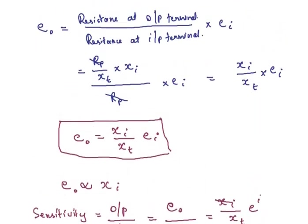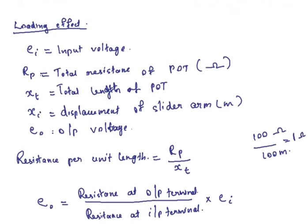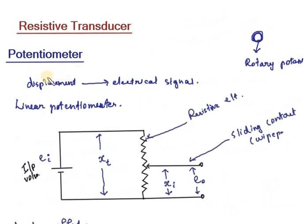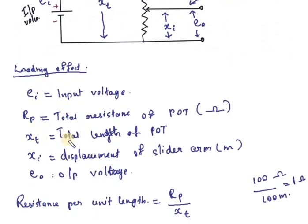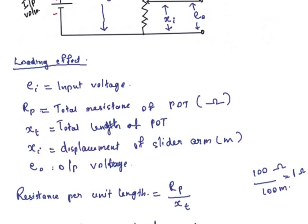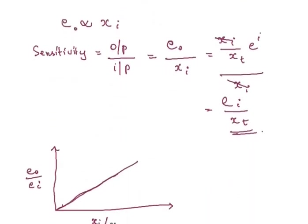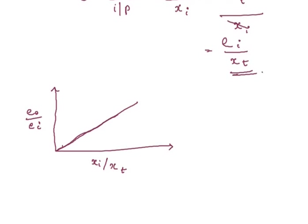This is the loading effect of the potentiometer. The potentiometer converts displacement into an electrical signal, making it a transducer. This is a linear potentiometer with input voltage applied across the resistive element and a slider. The output voltage is taken from the slider contact. The key parameters are total resistance RP, total length XT, displacement XI, and output voltage EO.